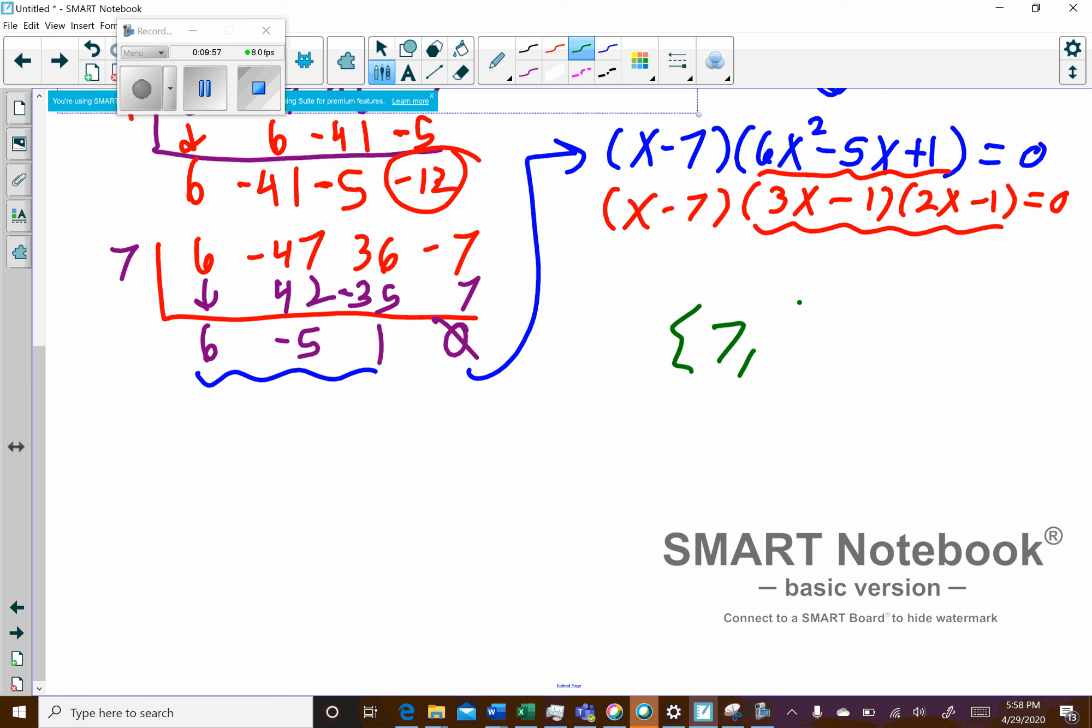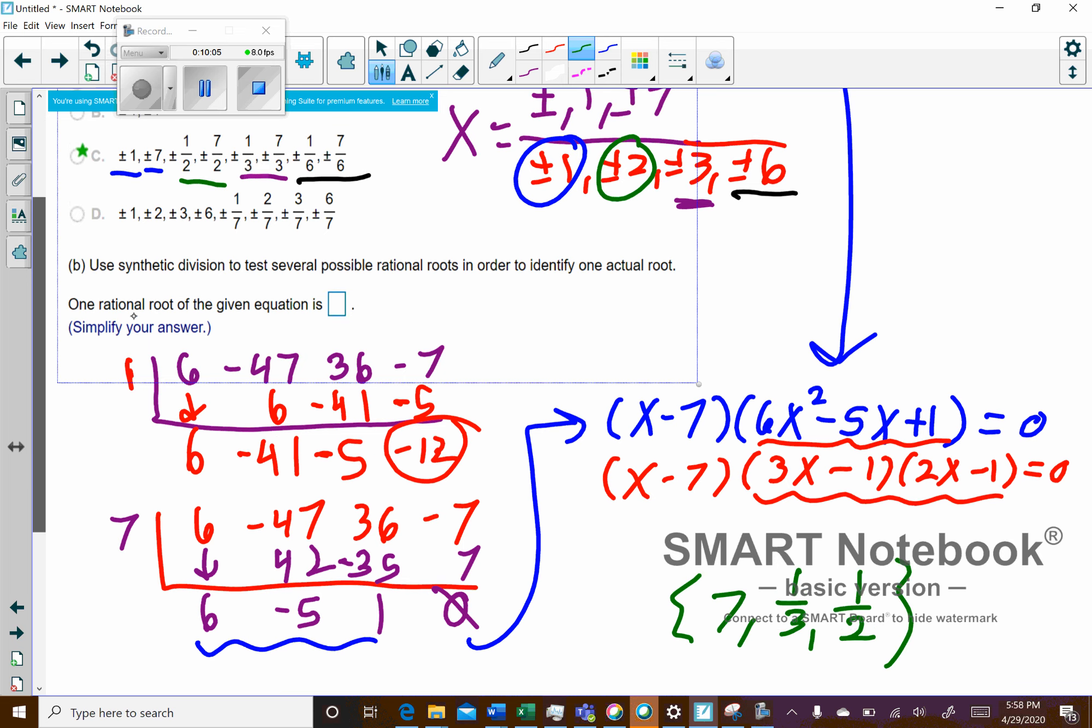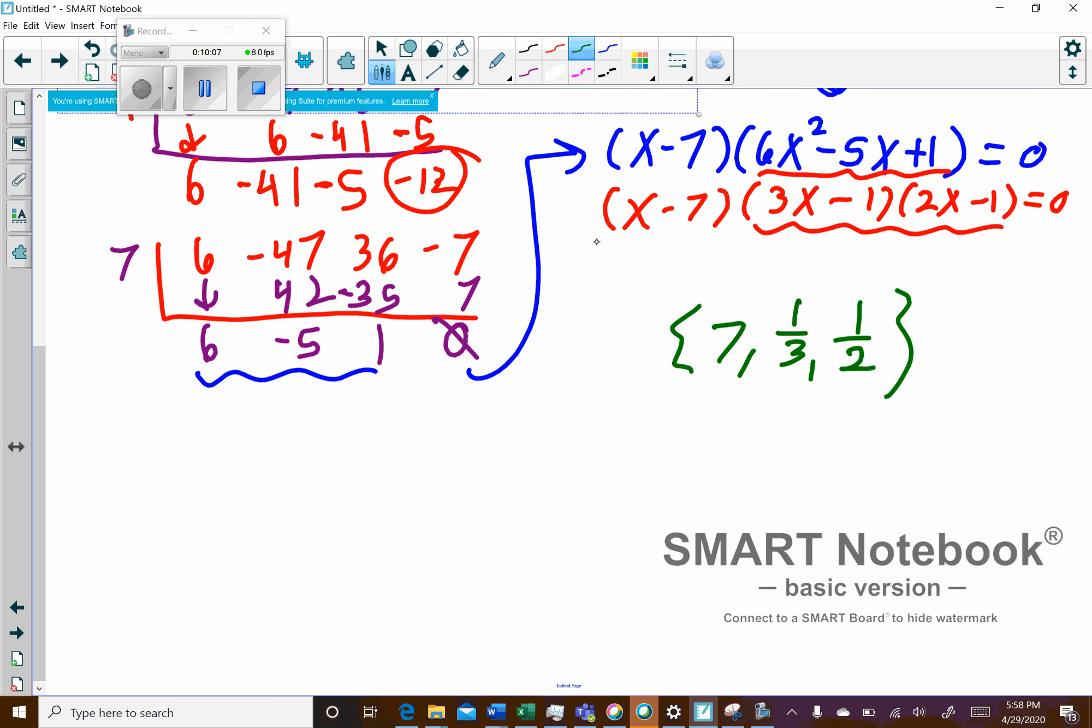So my solutions are 7, 1 third, and 1 half. And you'll notice that 1 third and 1 half was part of my rational possible set from up above. Now, like I said, be careful as you get into the later problems. The quadratic formula will probably be necessary.